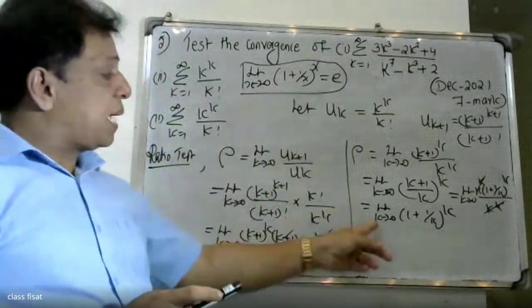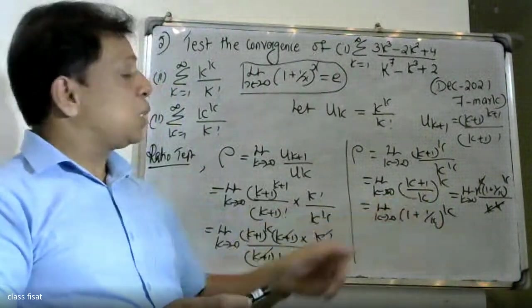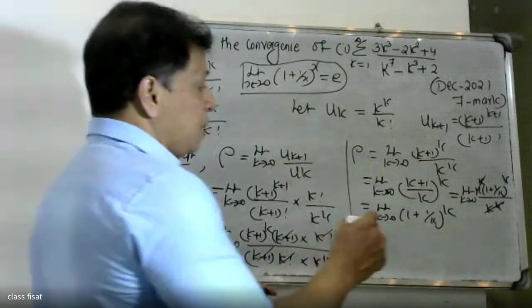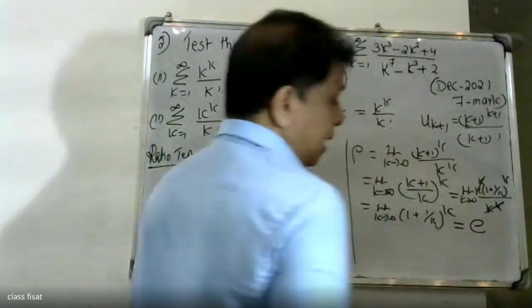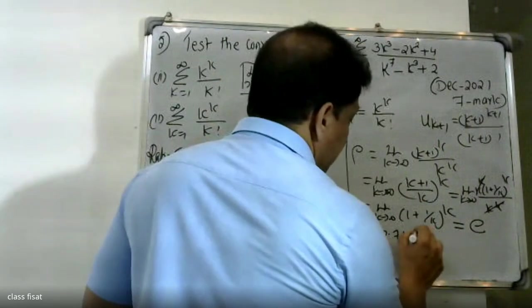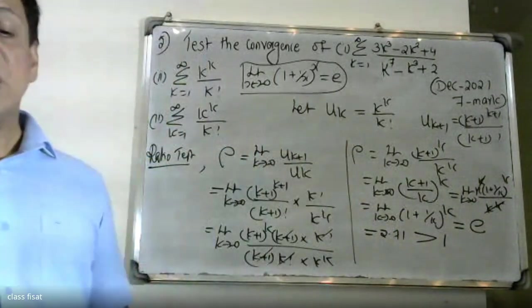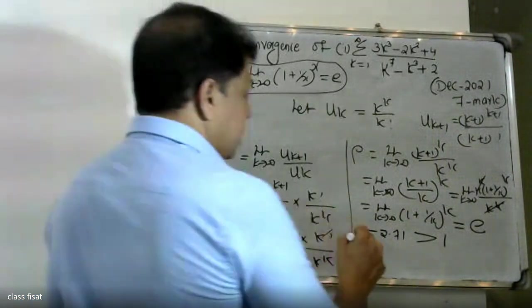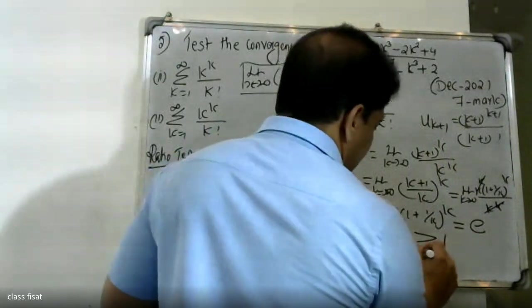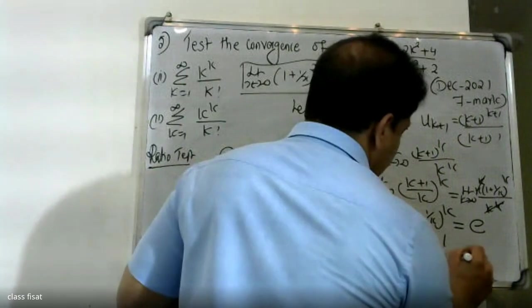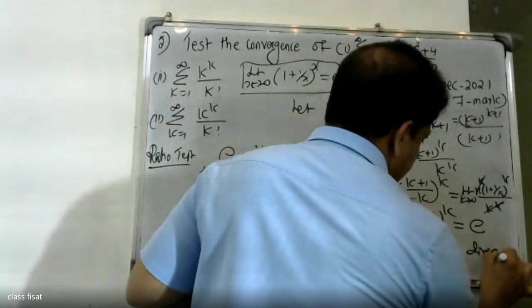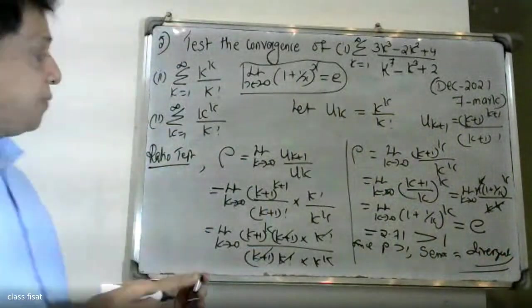As k tends to infinity, (1 + 1/k) raised to k gives the answer e, which is approximately 2.718. Since 2.718 is greater than 1, and since ρ is greater than 1, the given series is divergent.